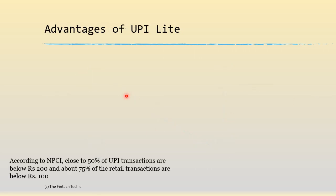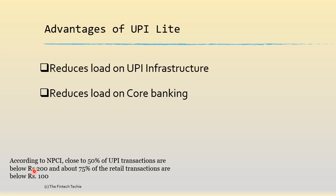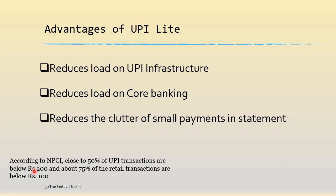So what are the advantages? We have seen the statistics where 50% of UPI transactions are less than 200 rupees and 75% are less than 600 rupees. UPI transactions are growing day by day — it's reached almost a billion per month. This method actually reduces load on the UPI infrastructure as well as on core banking because of the missing link mentioned earlier. Naturally, because these transactions are not hitting the core banking, it also reduces the clutter of small payments which you see in your account statement.